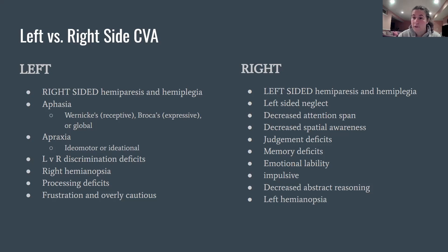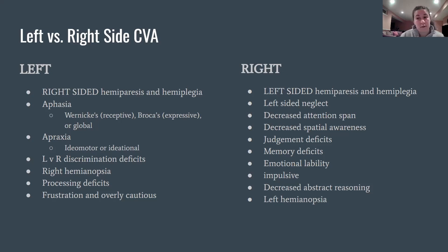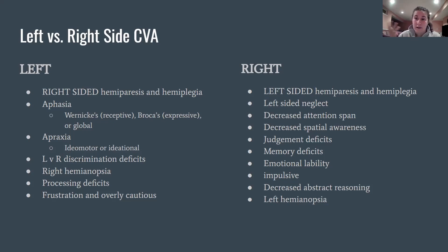Right-sided stroke patients also have judgment deficits — they'll think they can walk up stairs when they clearly can't. They're emotionally labile, going from happy to sad quickly because many emotions are processed on the right side of the brain. They tend to be impulsive, which combined with decreased attention span means they can wander off if you're not watching closely. They'll have decreased abstract reasoning since the right side is more artistic. And they'll have left hemianopsia — the left field of vision in both eyes is affected, not just the left eye itself.